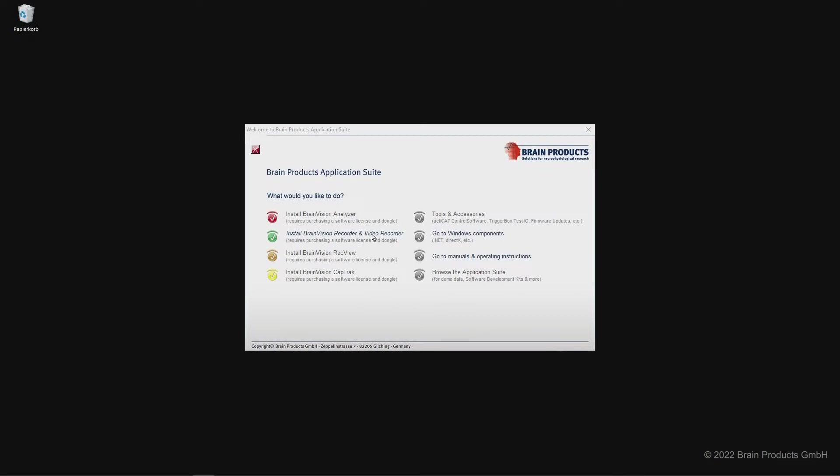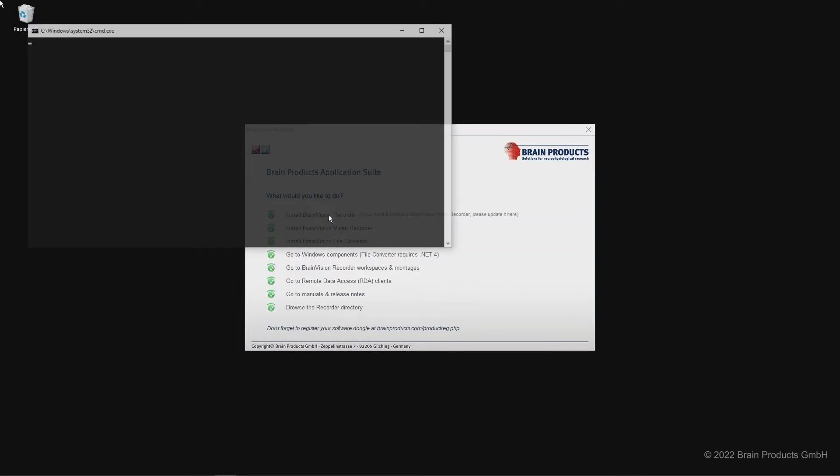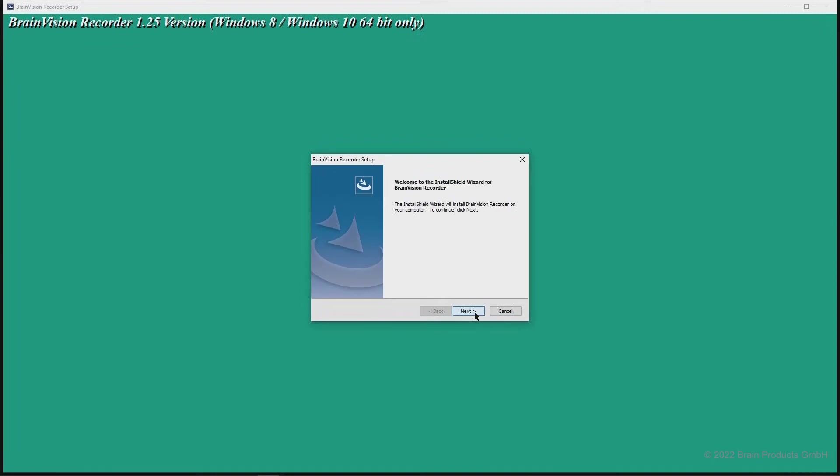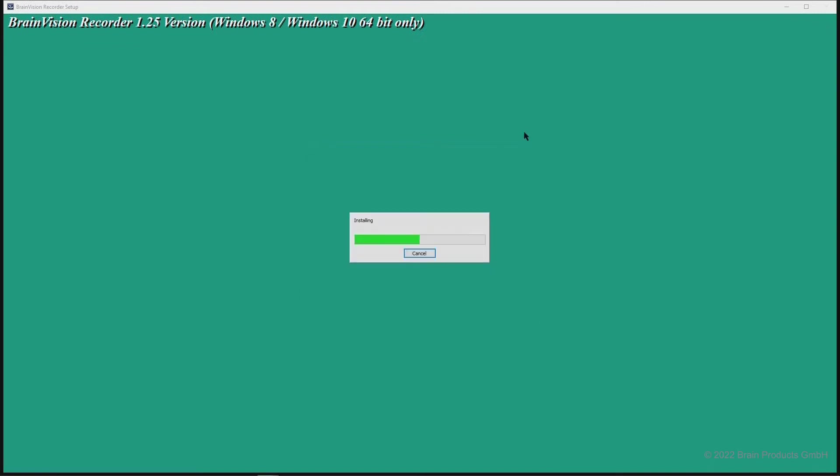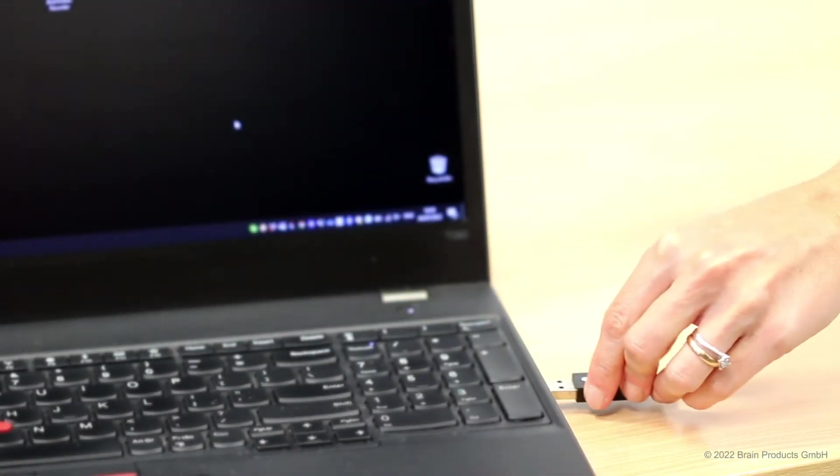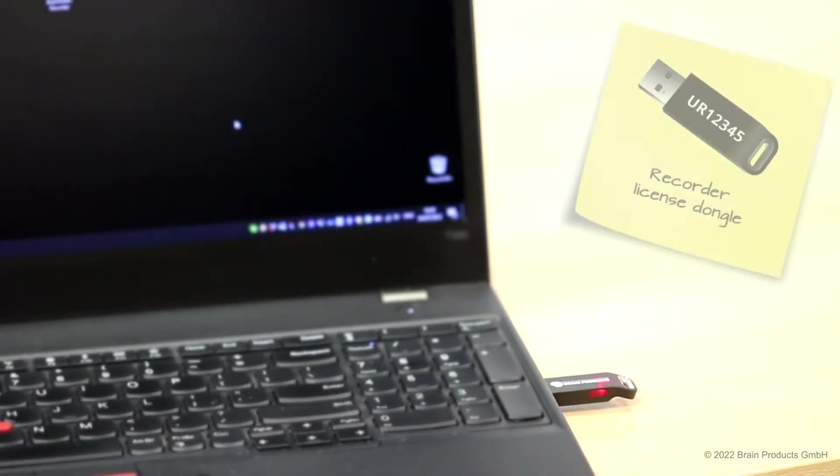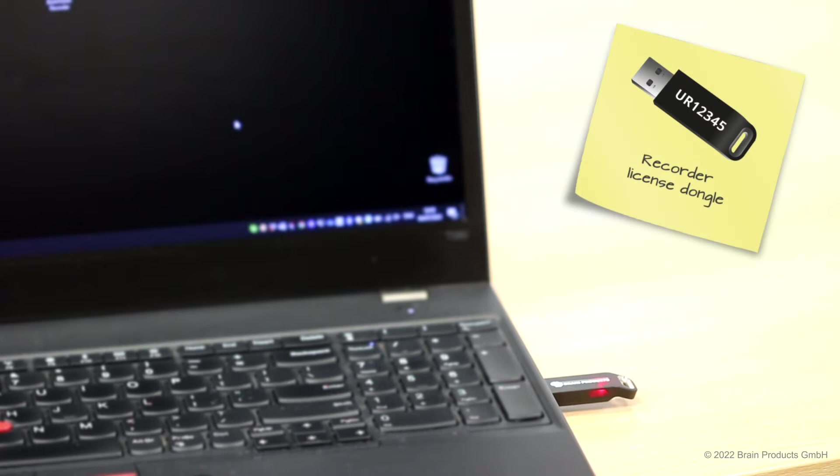Before setting up your BrainAmp amplifier, make sure you have BrainVision Recorder software installed on your computer. Detailed information on this is provided in the dedicated user manual. Keep in mind that using BrainVision Recorder requires your USB dongle to be connected to your computer.